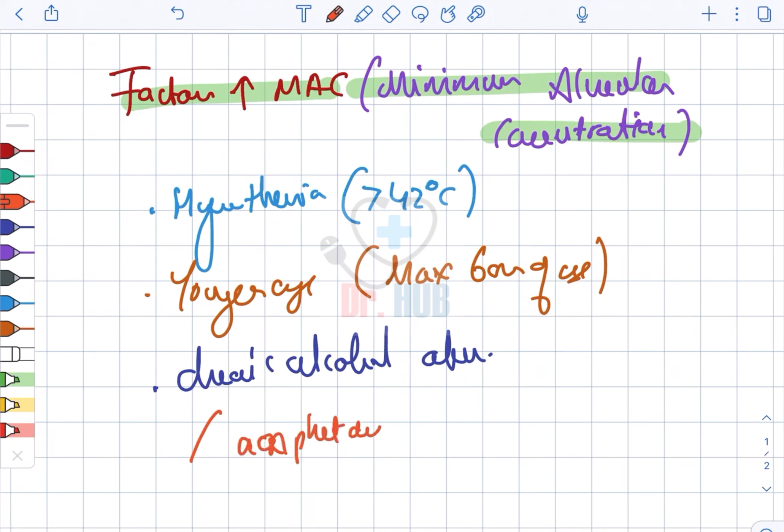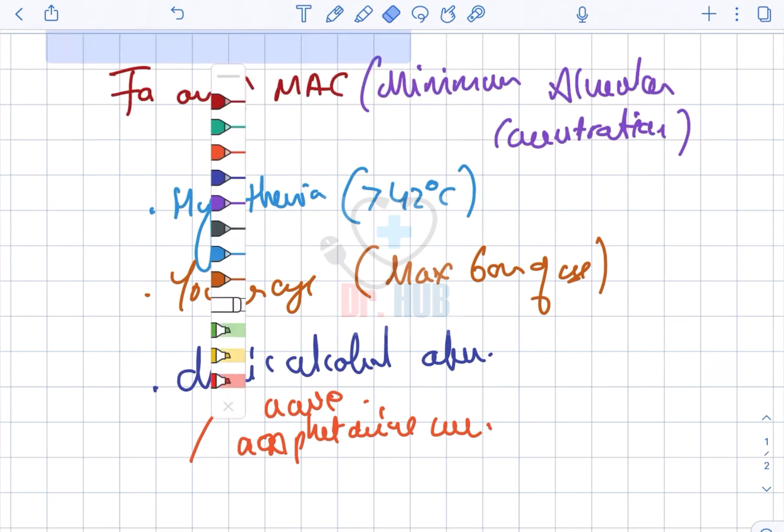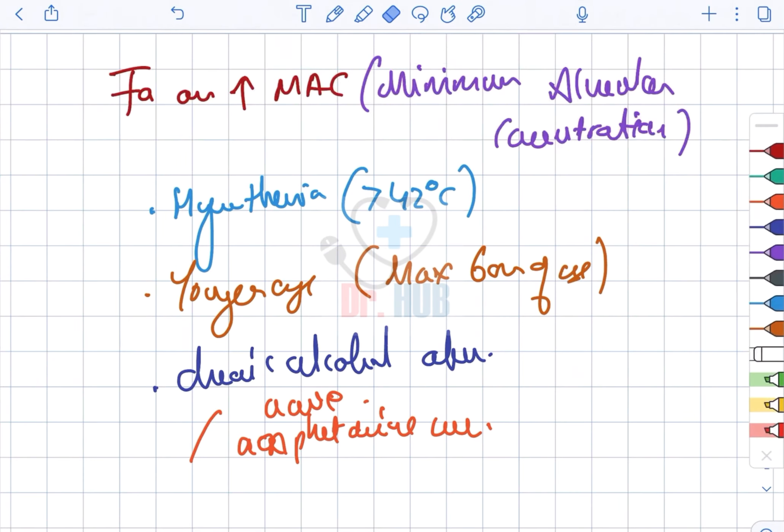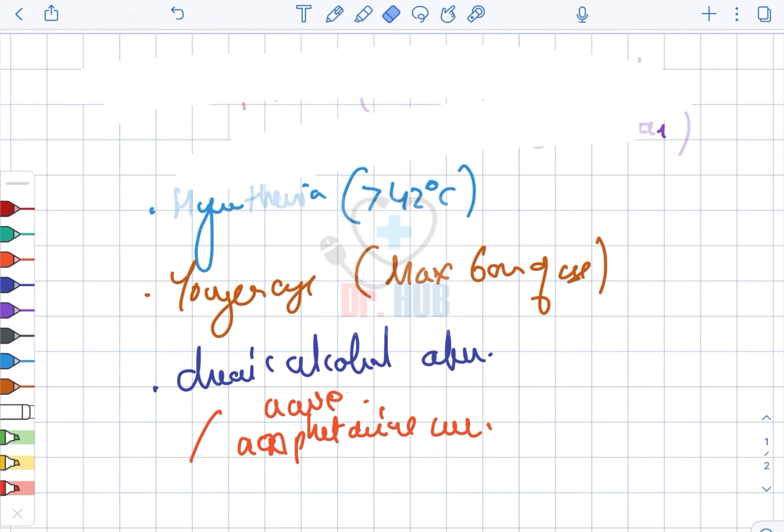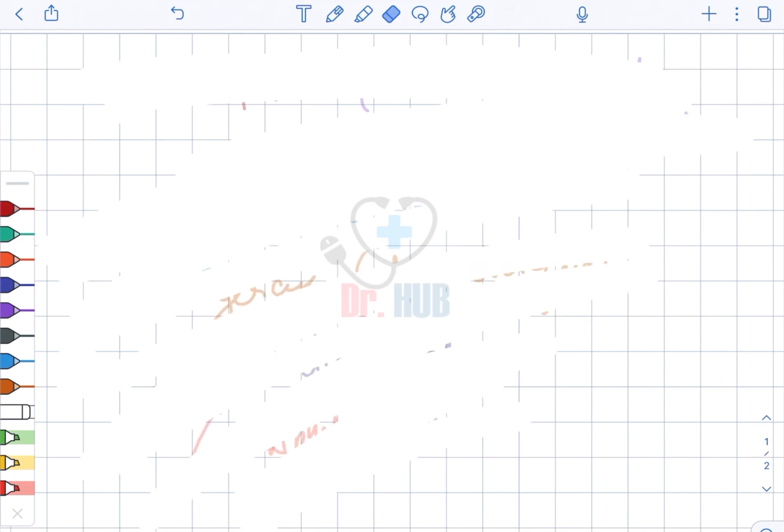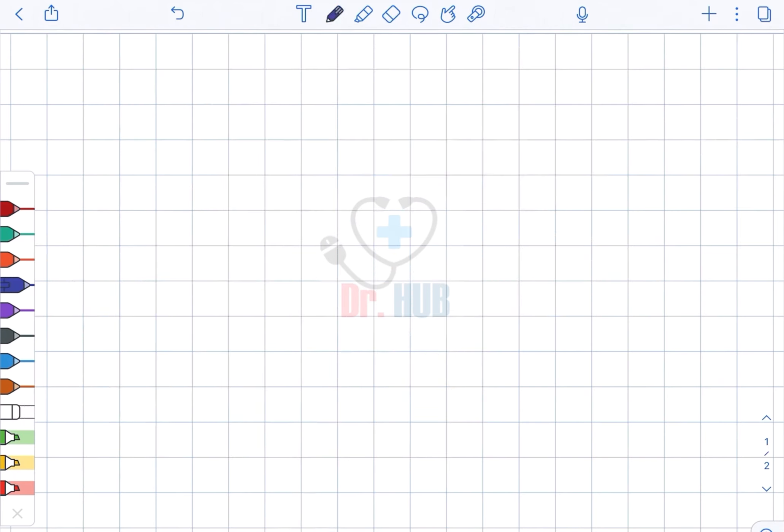Acute amphetamine use also increases MAC. Additionally, certain medications and drugs lead to increased MAC, including cocaine and ephedrine. Hyponatremia also causes a significant increase.